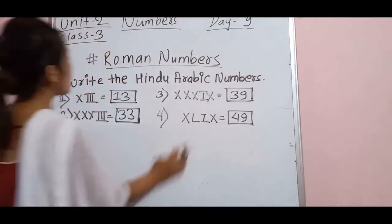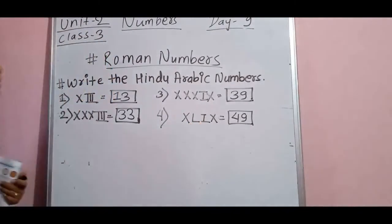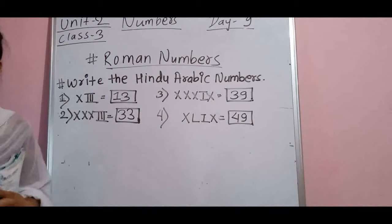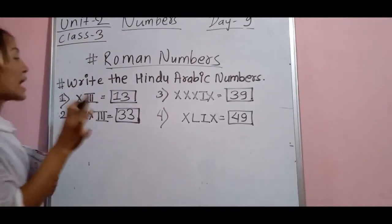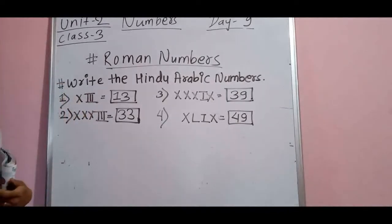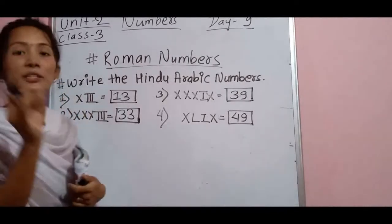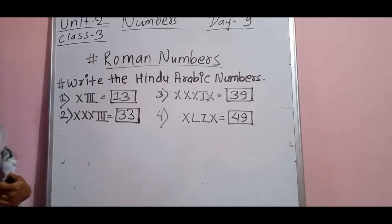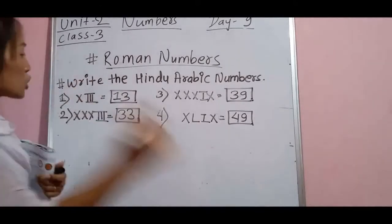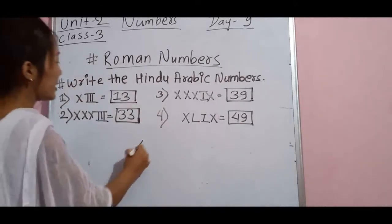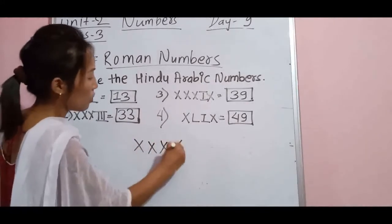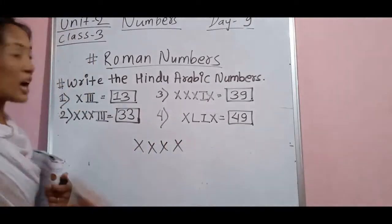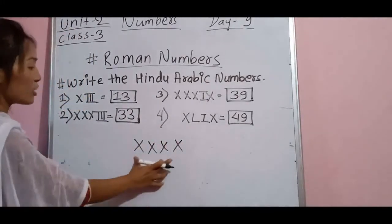But why? There are rules in Roman numbers. The rule is that you cannot write any Roman number more than 3 times. For example, X is called 10. You cannot write this 10 four times. If you have to write 40, you cannot simply write X four times.